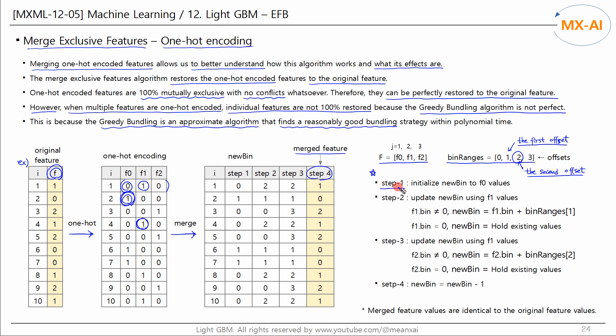In step 1, the values of new bin are initialized to the values of feature F0. Copy the values of F0 here. Step 2 updates the values of new bin using the values of F1. If the value of F1 is non-zero, update the value of new bin by adding the first offset to this value.